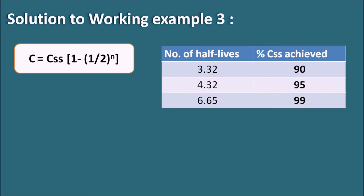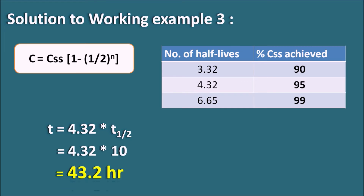Here in the question we are asked what is the time required to achieve 95% of CSS. To achieve 95% of CSS it takes 4.32 half-lives. So the time required t = 4.32 × T½ = 4.32 × 10 = 43.2 hours. The drug requires 43.2 hours to achieve 95% of the desired CSS.